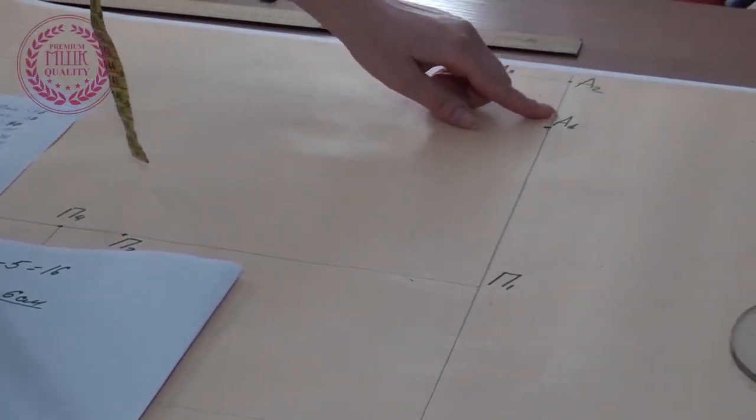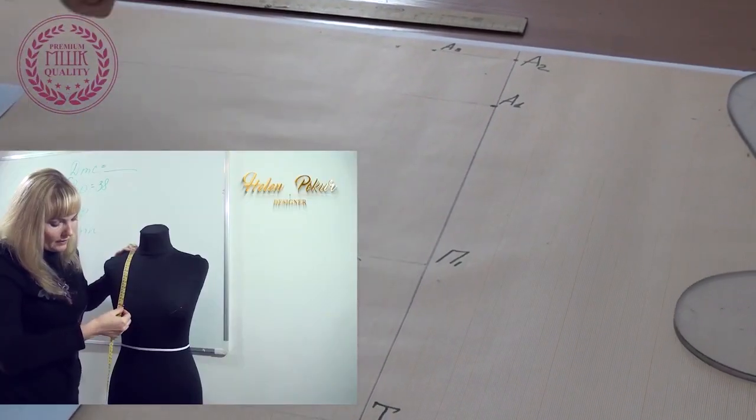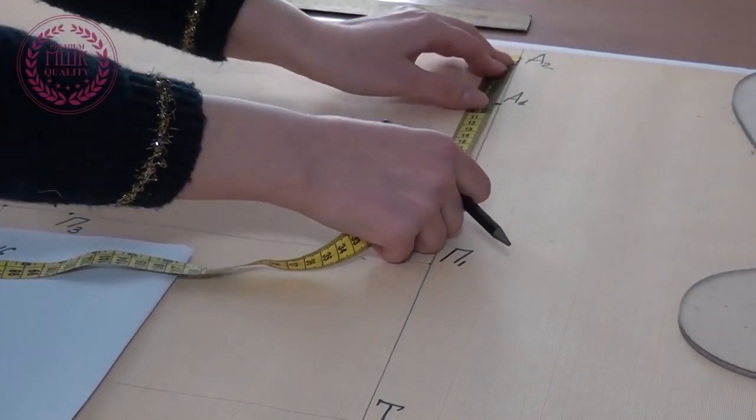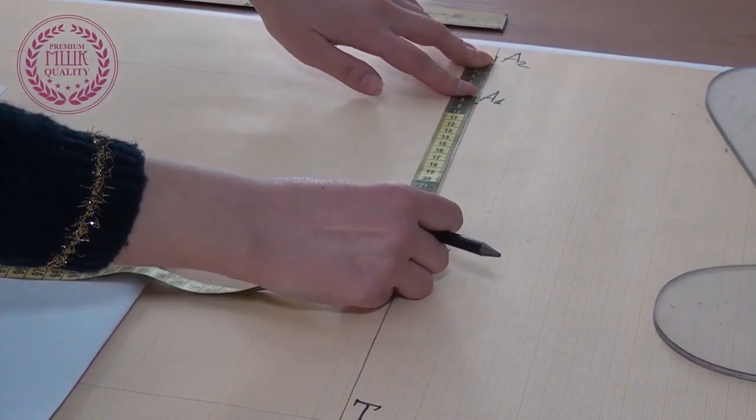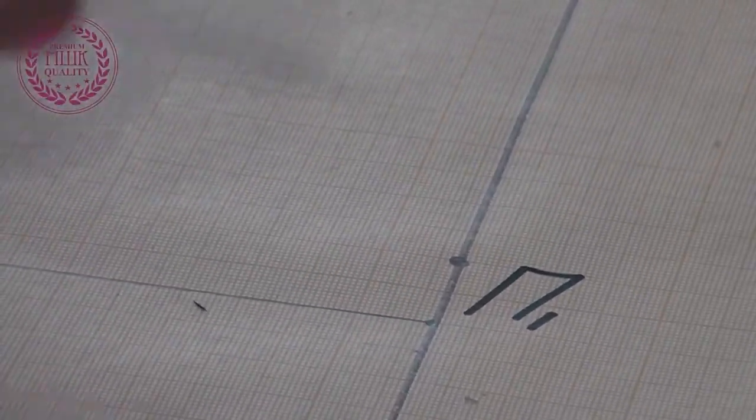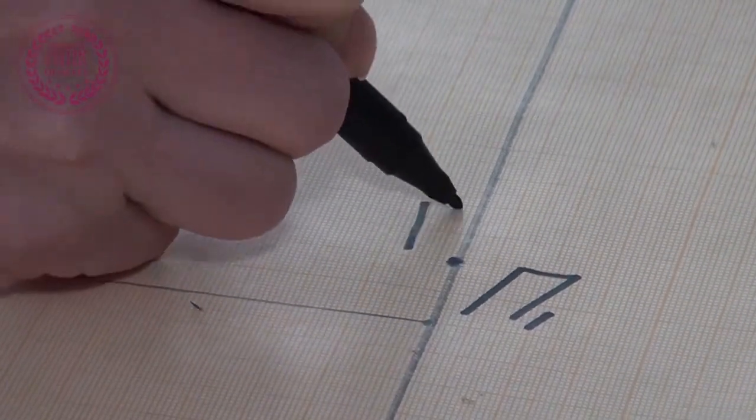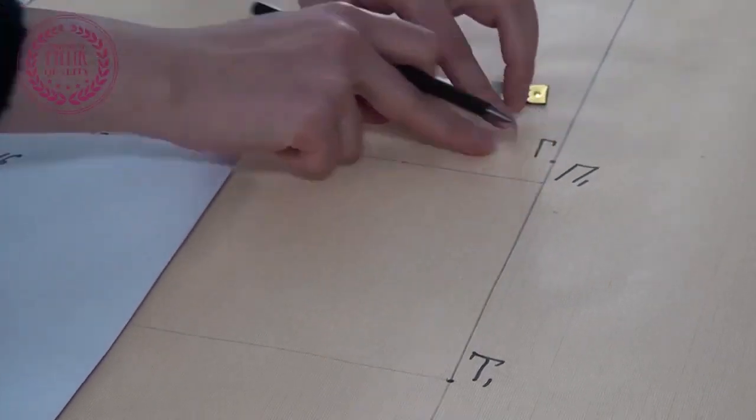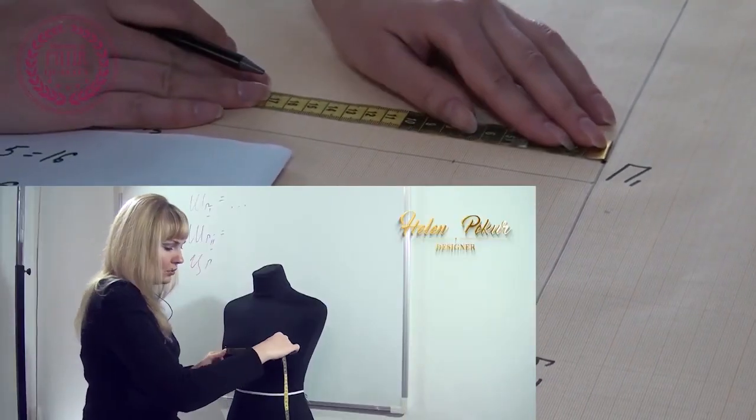From the point A2 down I postpone the measurement of the length from neck to bust. I mark the point with the Russian letter G. From this point to the left horizontally I postpone half the distance between the points of the bust.